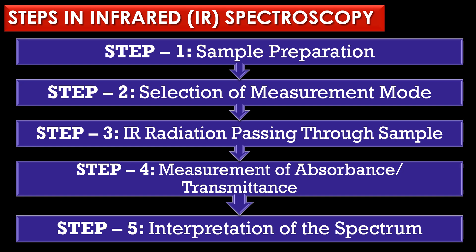The second step is selection of measurement mode. The spectrometer is set to either transmission mode or attenuated total reflectance (ATR) mode, which is ideal for solid samples or aqueous solutions. The third step is infrared radiation passing through the sample — infrared light is directed through or reflected off the sample, which absorbs specific frequencies causing molecular vibrations.